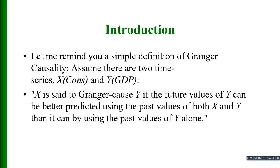Let me remind you of a very simple definition of Granger causality. Assume there are two time series variables: X, where X stands for consumption, and Y, where Y stands for GDP. We can say X is set to Granger cause Y if the future values of Y can be better predicted using the past values of both X and Y than they can be predicted by using the past values of Y alone.